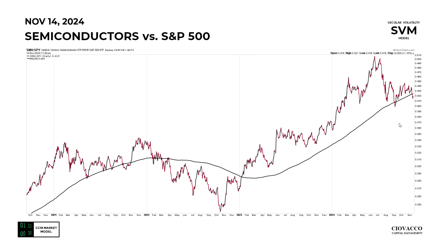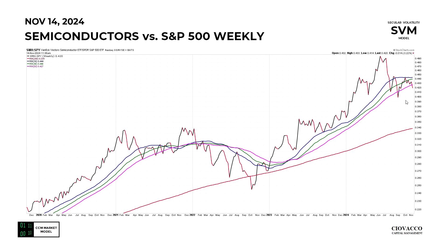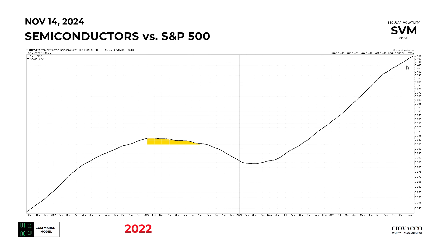If we strip away the other moving averages and focus on the black 250-day, and then strip out price and just focus on the 250-day moving average, it helps illustrate a point. The trend in January 2022 was more susceptible to a rollover, which aligns with the flip from a positive slope in Q4 2021 to a negative slope of that 250-day in early 2022. In the present day, on November 14, 2024, the trend is stronger than it was in January 2022, allowing us to be a little more patient than we would have been in 2022.